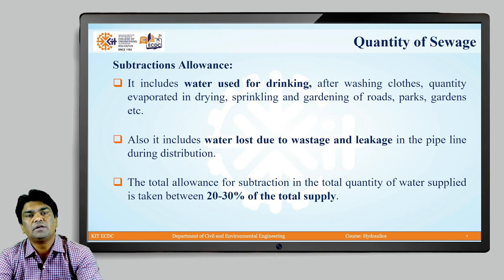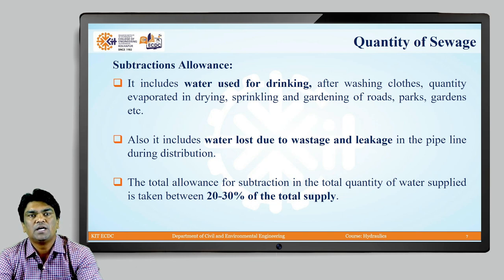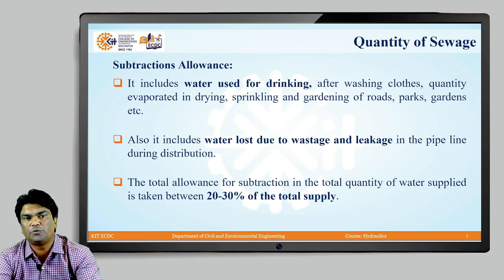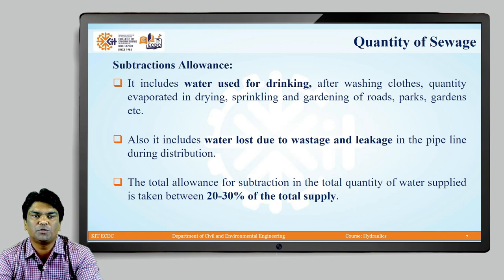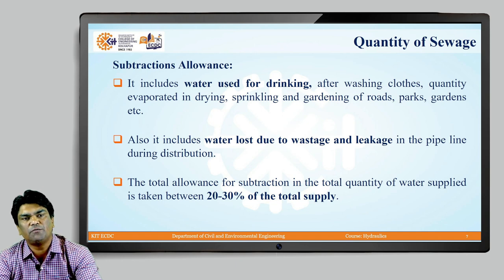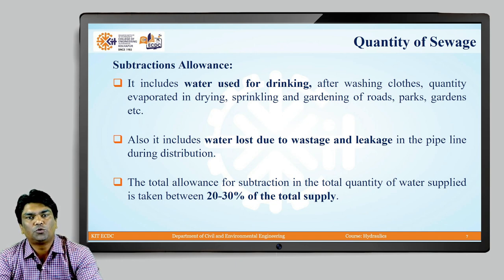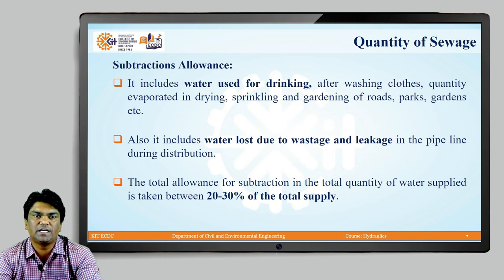The next consideration is subtraction allowance. It includes water used for drinking, water used for washing clothes, quantities evaporated in drying, sprinkling and gardening of roads, parks, and gardens. Around 70 to 80 percent of water is converted into sewage, and the rest is utilized for other purposes — these are considered subtraction losses. It also includes water lost due to wastage and leakages in the distribution pipeline. The total allowance for subtraction is taken as 20 to 30 percent of total supply.